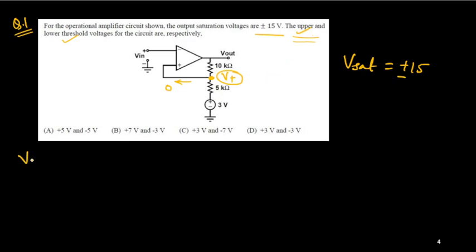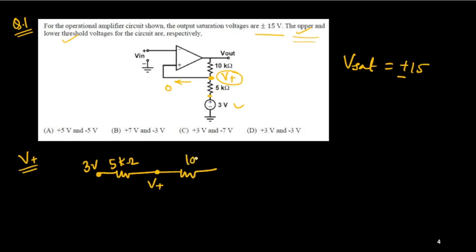V-plus will have two values: one is called the upper threshold and the other is called the lower threshold. These two values we want to calculate for this problem. To find V-plus, we can use the superposition principle — it is very simple. So I will rewrite the circuit: there is a 5 kΩ resistance on the left with 3 volts at that node, and a 10 kΩ resistance on the right connected to V-out.